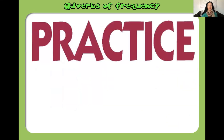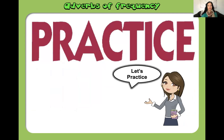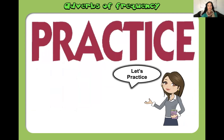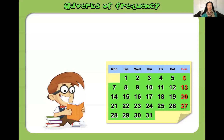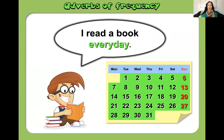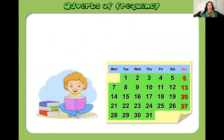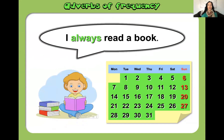Now let's practice. All days shaded in green on our calendar — 'I read a book every day.' You see how it happens every day? We can also say 'I always read a book.' So every day equals always.